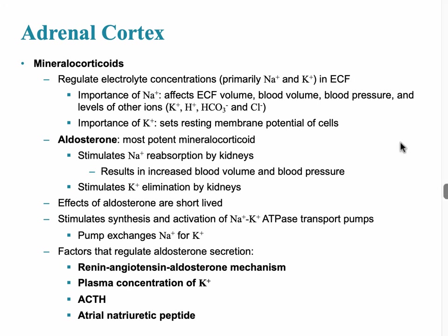The outer layer of the adrenal cortex produces mineralocorticoids, and the major mineralocorticoid is aldosterone. It causes reabsorption of sodium, which increases blood volume and blood pressure — the more sodium in the blood, the higher the blood pressure. The adrenal cortex works via traditional hormonal stimuli: corticotropin releasing hormone (CRH) is released from the hypothalamus, which triggers the anterior pituitary gland to secrete ACTH, and ACTH then stimulates the adrenal cortex to release these hormones.